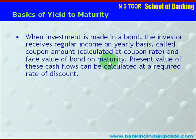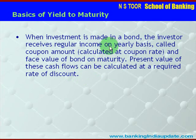The present value of these cash flows — the coupon amount received yearly and the face value received at maturity — can be calculated at a given rate of discount.